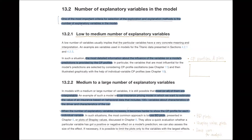The second scenario is: what if we have a medium to large number of explanatory variables, like 100 or more? In that case, the CP profile is not feasible because we cannot draw all those associations as plots for more than 100 explanatory variables. So what we can do is use the breakdown plot.